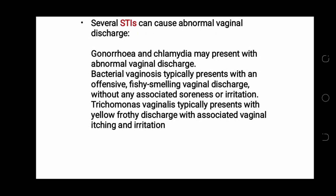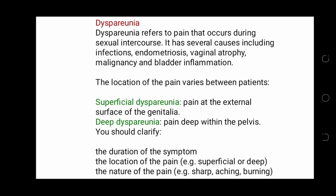Several sexually transmitted infections can cause abnormal vaginal discharge. Gonorrhea and chlamydia may present with abnormal vaginal discharge. Bacterial vaginosis typically presents with an offensive, fishy-smelling vaginal discharge without any associated soreness or irritation. Trichomonas vaginalis typically presents with yellow frothy discharge with associated vaginal itch and irritation. Ask about dyspareunia, which refers to pain occurring during sexual intercourse, with several causes including infection, endometriosis, vaginal atrophy, malignancy, and bladder inflammation. You should clarify the duration, location, and nature of the pain using SOCRATES.